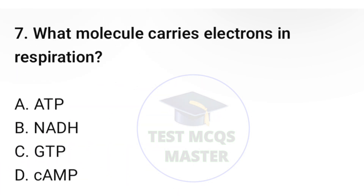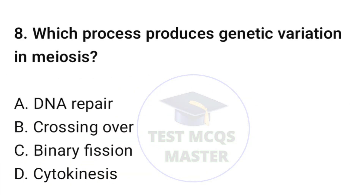Question number seven: which molecule carries electrons in respiration? The correct option is B, NADH. Question number eight: which process produces genetic variation in meiosis? The correct option is B, crossing over.